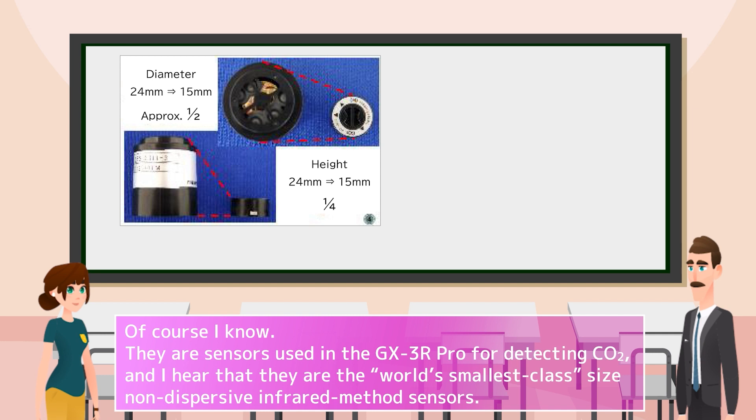Of course I know. They are sensors used in the GX-3R Pro for detecting CO2, and I hear that they are the world's smallest class size non-dispersive infrared method sensors. That's right.